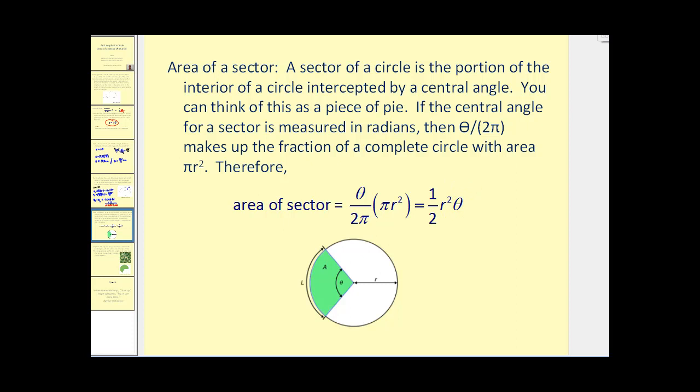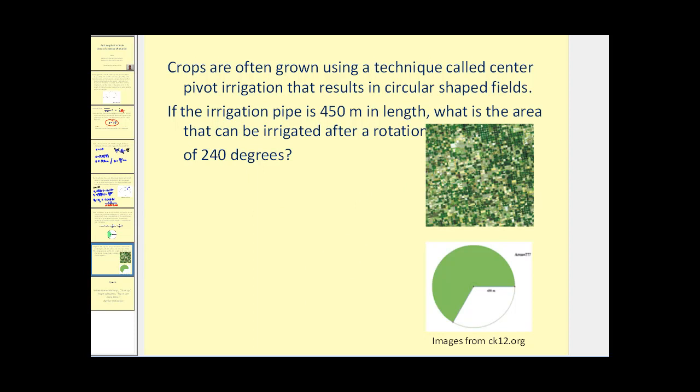Crops are often grown using a technique called center pivot irrigation that results in circular shaped fields. If the irrigation pipe is 450 meters in length, what is the area that can be irrigated after a rotation of 240 degrees? The irrigation pipe of 450 meters would be this length here. If it rotates 240 degrees, it would carve out this area in green, or water this much land. Let's figure out what the area of this land would be.